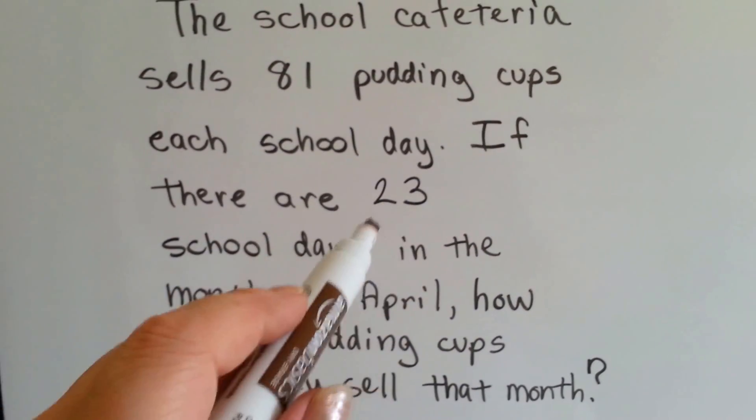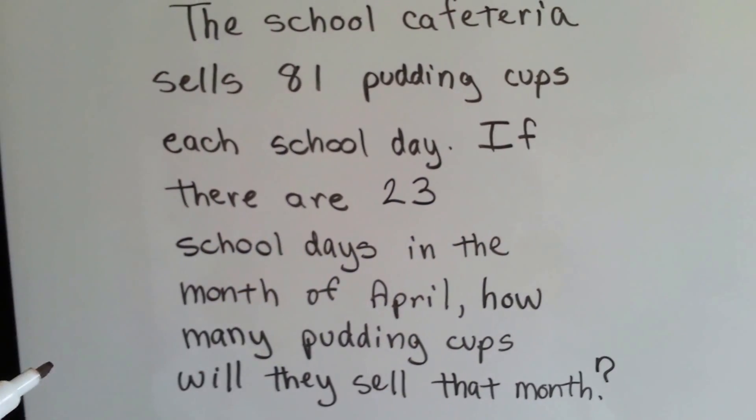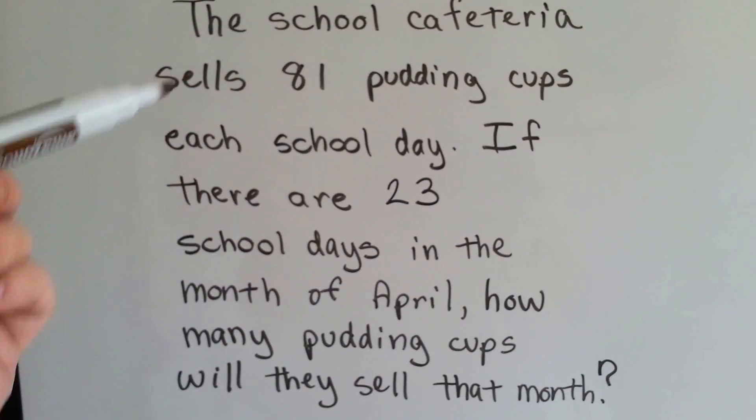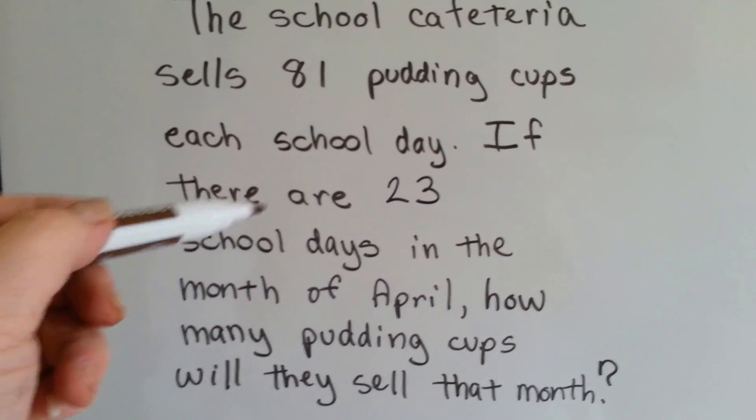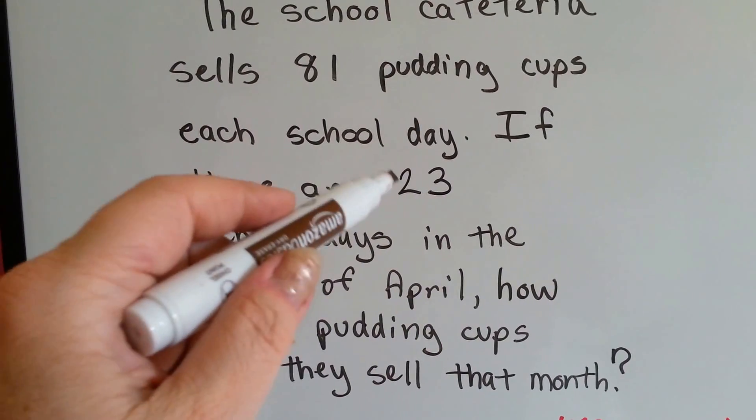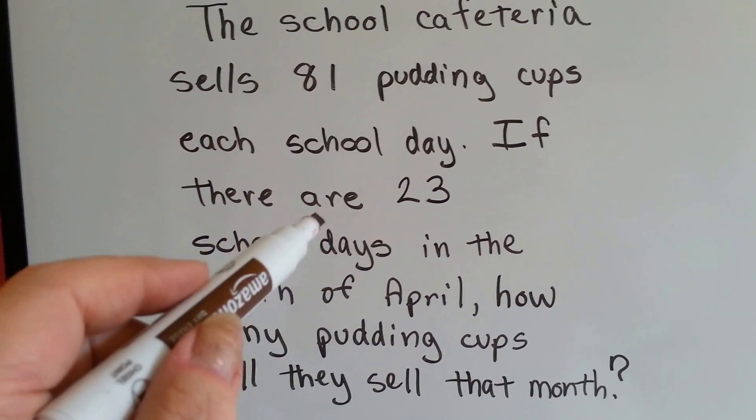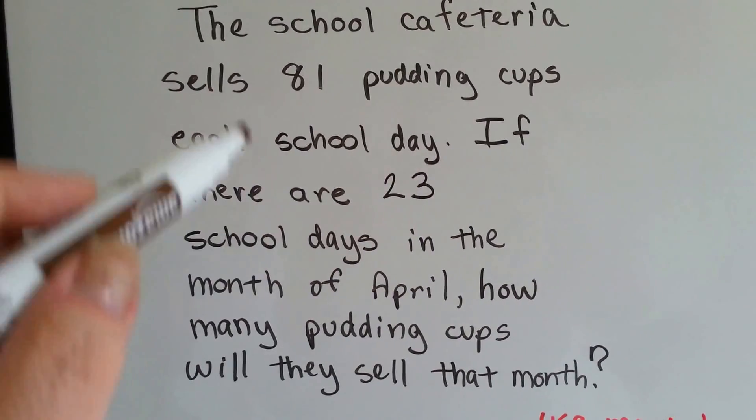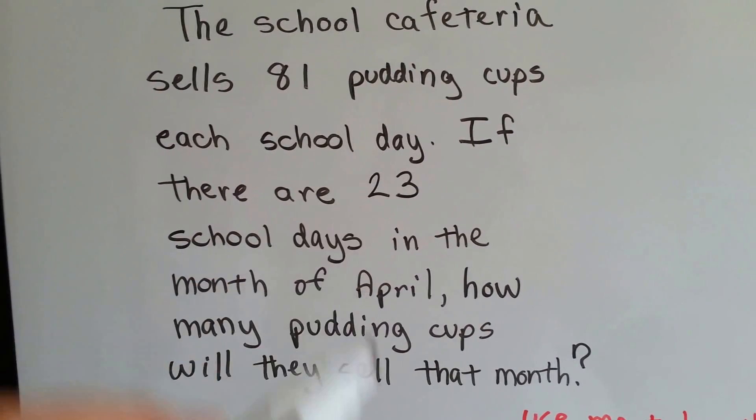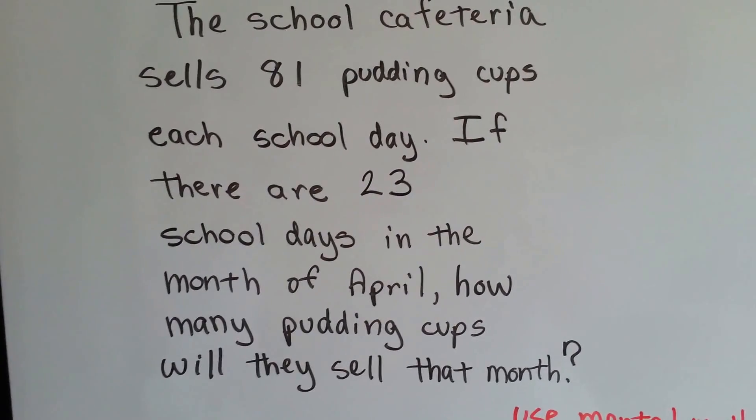There may be thirty days in April, but you have Saturdays and Sundays, and the school isn't going to sell pudding cups on a Saturday or Sunday. They only sell it on the school days. So, you take out the Saturdays and Sundays, and that leaves twenty-three days of school for the month of April. So, if they sell eighty-one pudding cups for the twenty-three days, how many pudding cups are they going to sell?